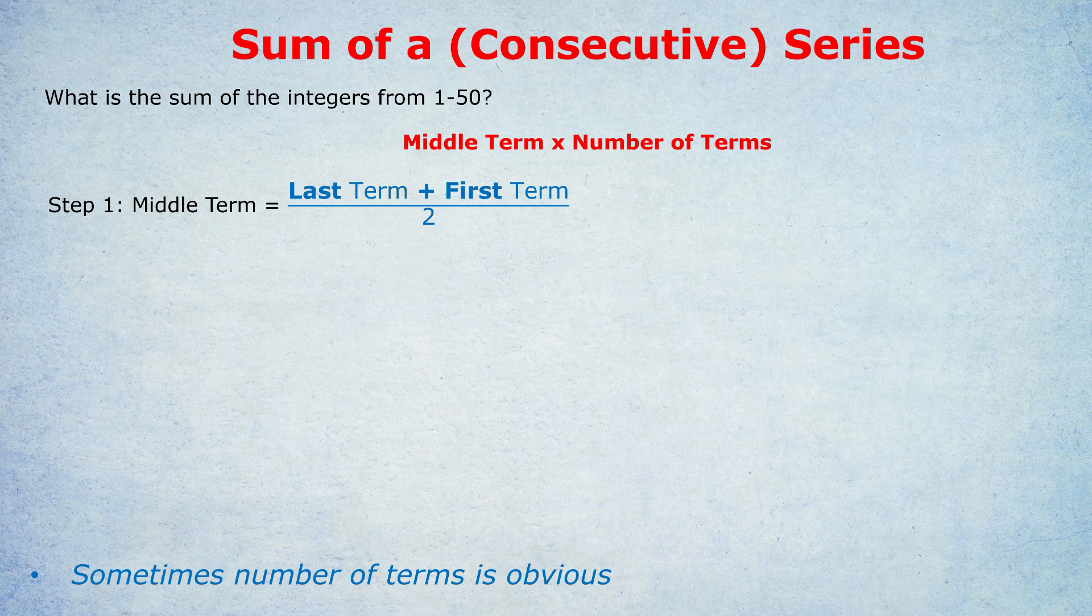Anyway, the middle term is the last term plus the first term divided by 2. In this case, that would be the one plus the 50, or the 50 plus one, I should say, divide by 2. 51 divided by 2 is 25.5. So that's how I got the middle term is 25.5. Some of you may raise your hand and say, but 25.5 isn't in this list, right? It's not an integer from one to 50. It doesn't actually matter if the middle term is in the list or not. It just serves as the middle term for this calculation purpose.